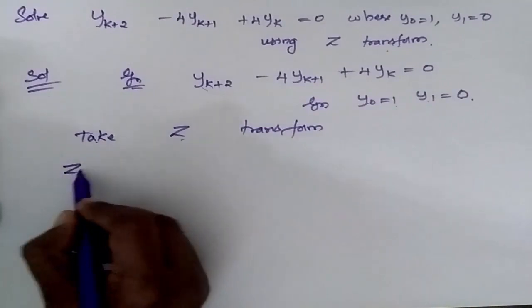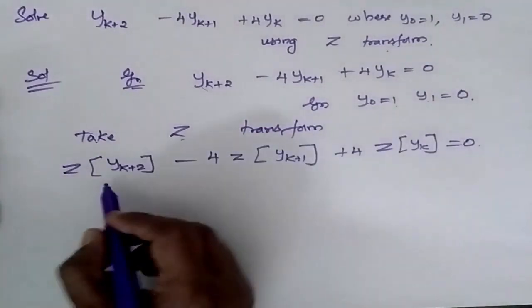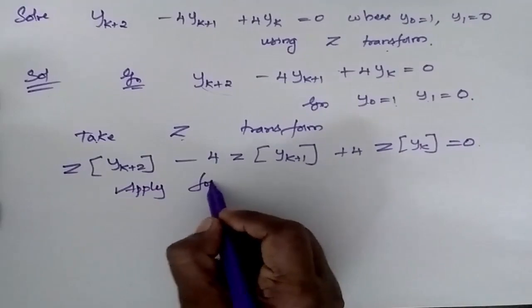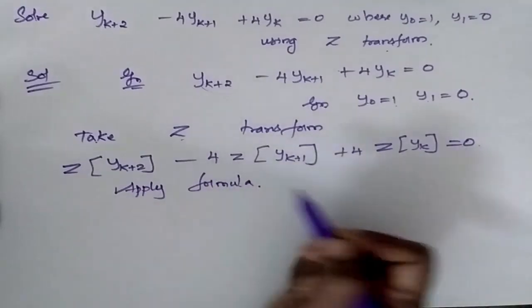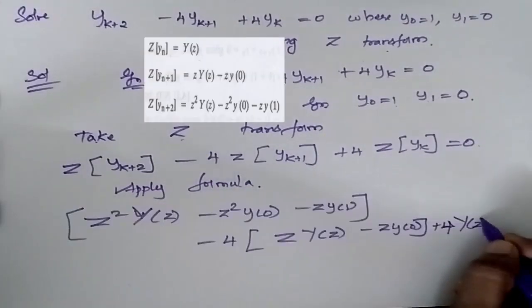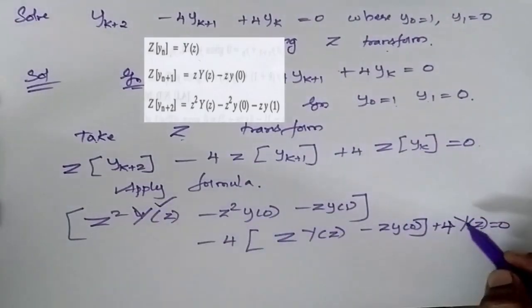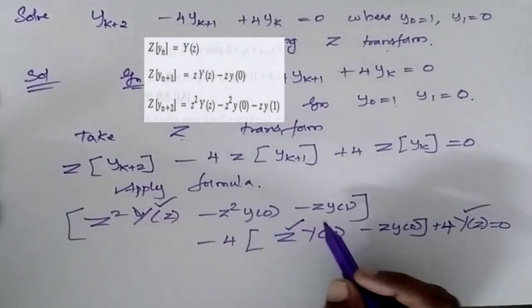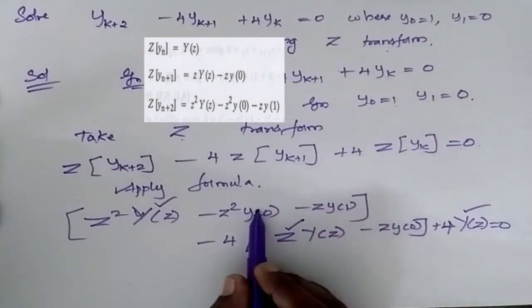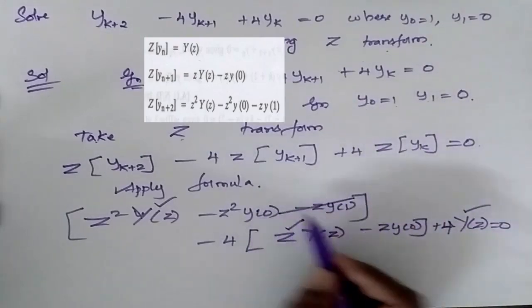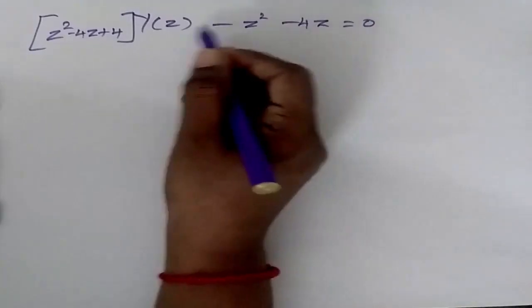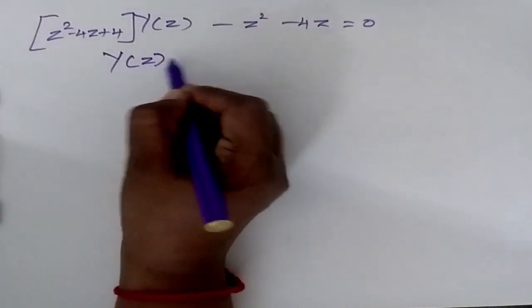So I will be applying the formula. Now I am going to combine Y of Z terms together. My Y0 is 1 and Y1 is 0. So my Y1 term will get cancelled. So now I am going to have only Y of Z on this side.